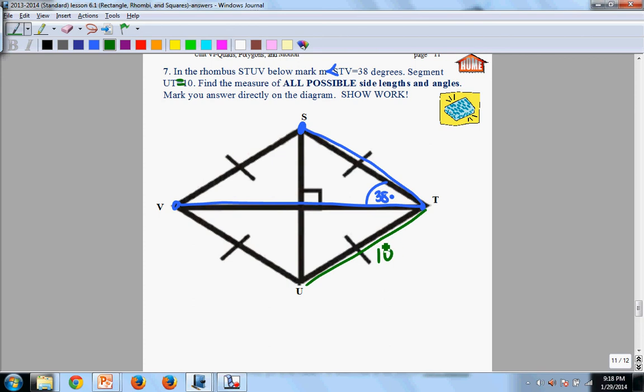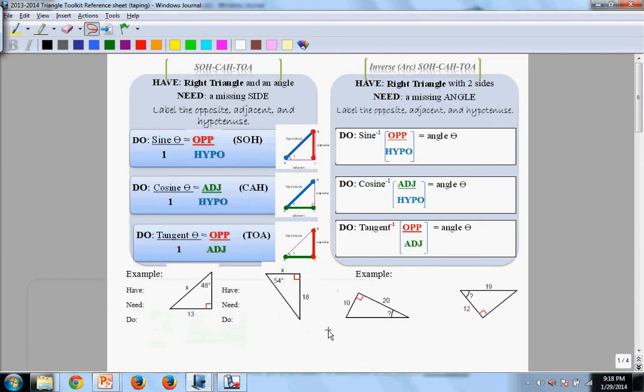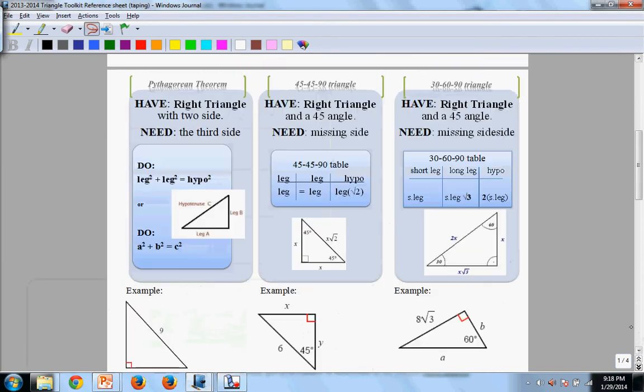From this, you're going to find all possible side lengths and angle measures. A couple things you want to watch out here for is, of course, you have a right triangle here. At some point, that's going to come into play. Again, if you have a right triangle, surprise, surprise, something from the My Best Friend is going to come in handy here.